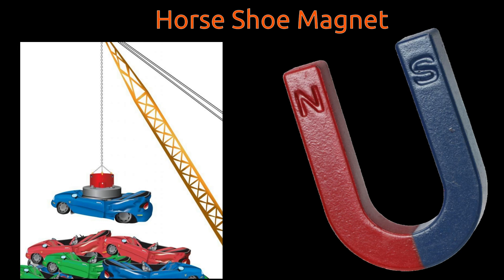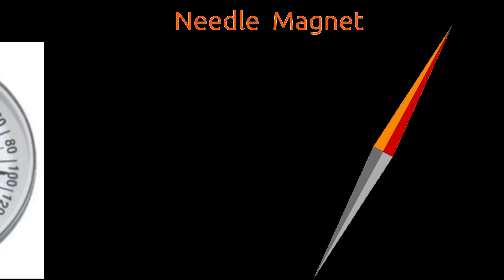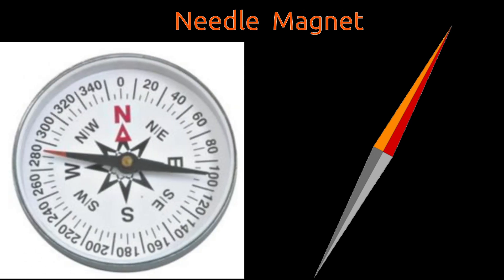Magnets can be made in ring form as well. There are different varieties of ring magnet. Needle magnets are similar to bar magnets with pointy ends. Magnetic compasses majorly use needle magnets.